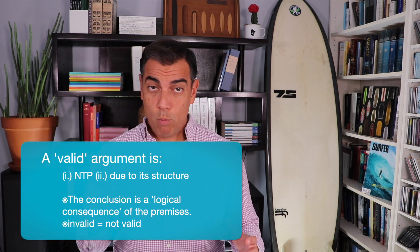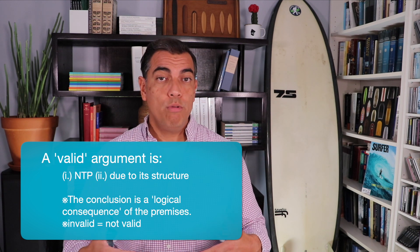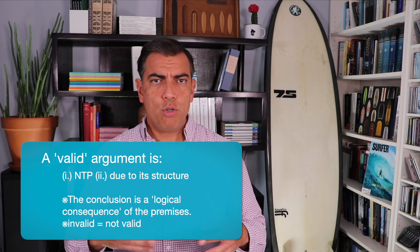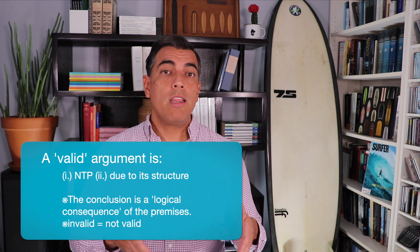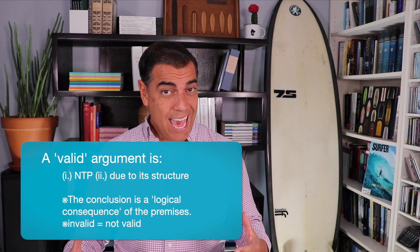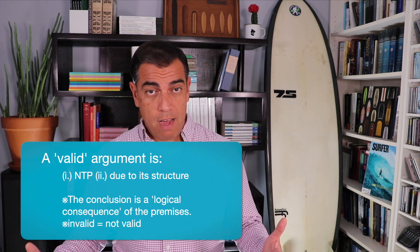This is exactly the kind of NTP we're interested in in logic. We want to know about arguments whose structures are such that if their premises are true, the conclusion has to be true — and then apply that knowledge to all arguments with that same structure. If an argument is valid, it is NTP, and that NTP is due to the structure of the propositions in that argument. We'll say the conclusion is a logical consequence of the premises, and an argument is invalid if it's not valid. As Smith notes, this is still a somewhat imprecise definition of validity.